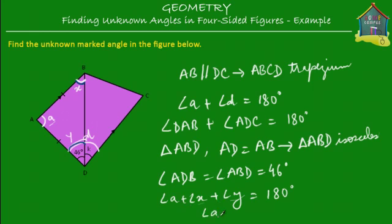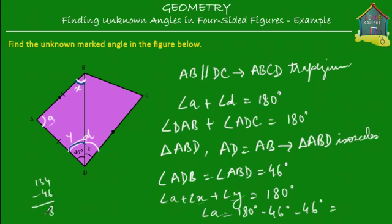So we can find angle A. A is 180 degrees minus 46 degrees minus 46 degrees. 180 minus 46 is 134, and 134 minus 46 is 88 degrees. So this angle A is equal to 88 degrees.